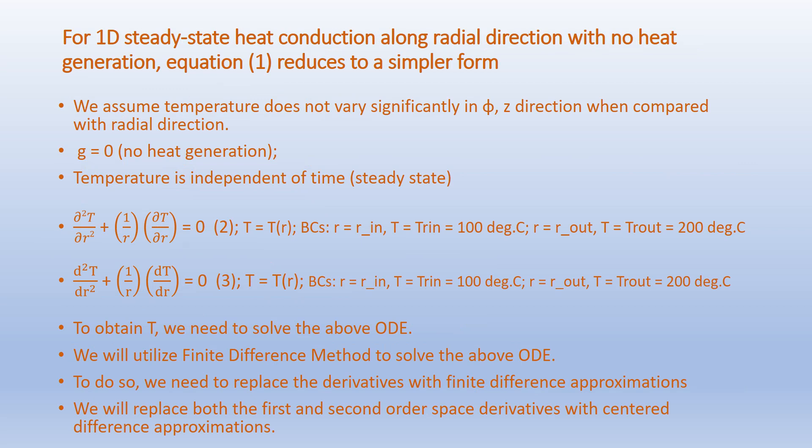For 1D steady-state heat conduction along the radial direction with no heat generation, the equation reduces to a simpler form. We assume that the temperature does not vary significantly in the φ or Z direction compared with the radial direction R. There is no heat generation, so G equals 0, and temperature is independent of time as we are dealing with the steady-state condition.